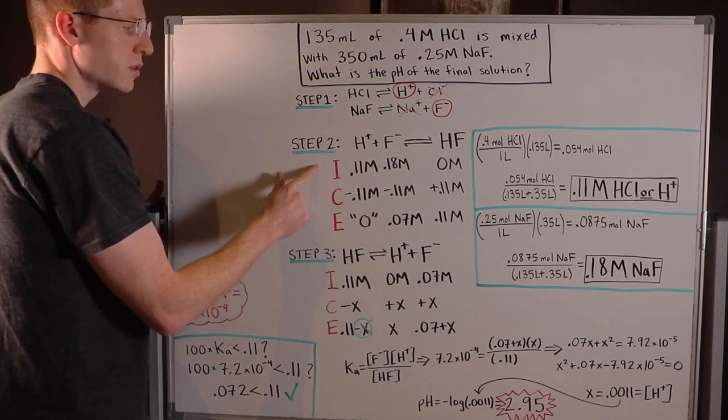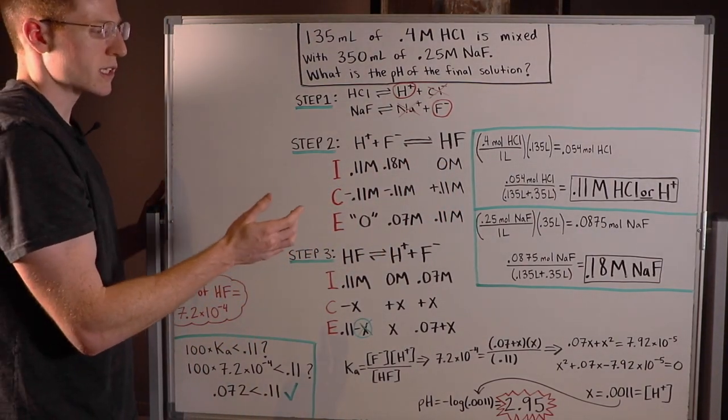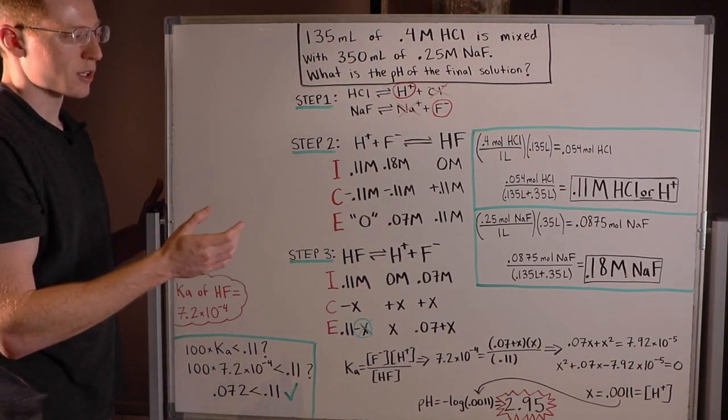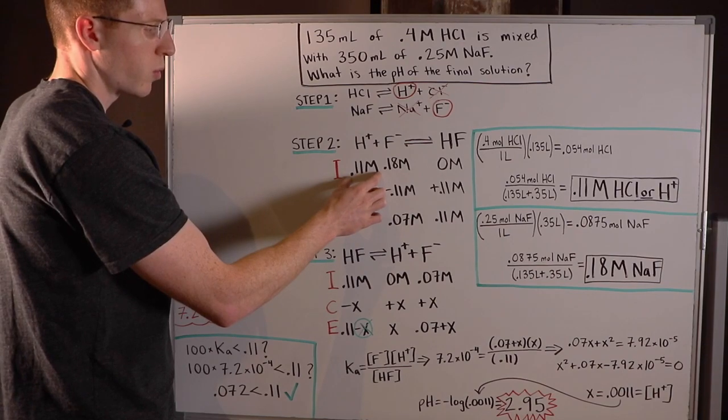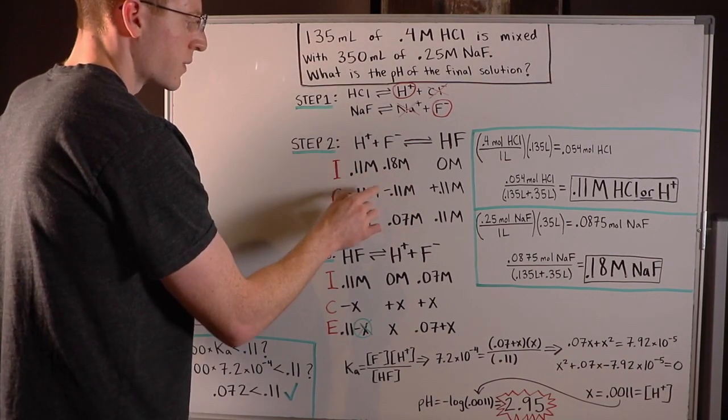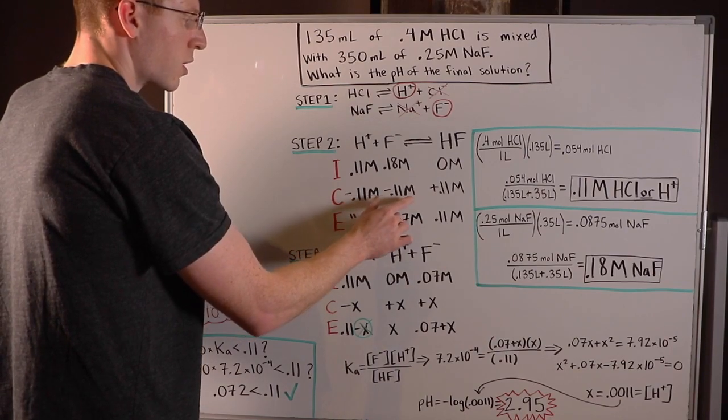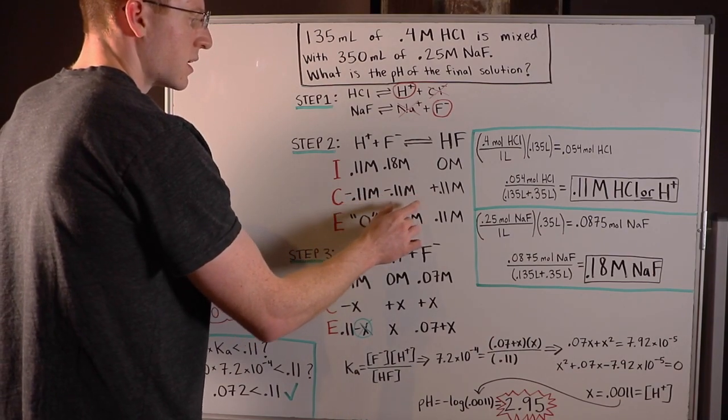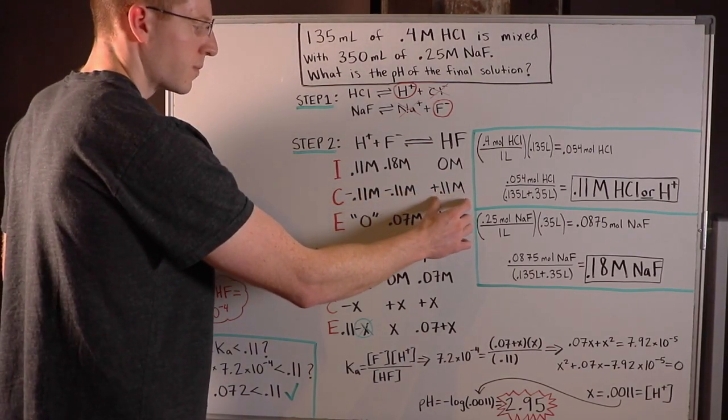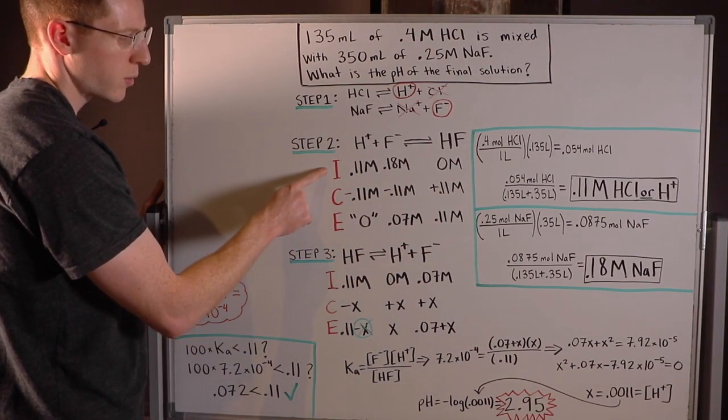And then in step two, what you do is you take away the limiting reactant amount. So the limiting reactant is the reactant that runs out first. And we know that since 0.11 is smaller than 0.18, our limiting reactant is going to be H plus. So I took away 0.11 molar from each of my reactants, and of course, that amount is going to go into our product HF here.